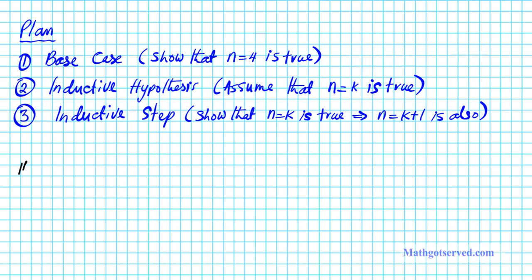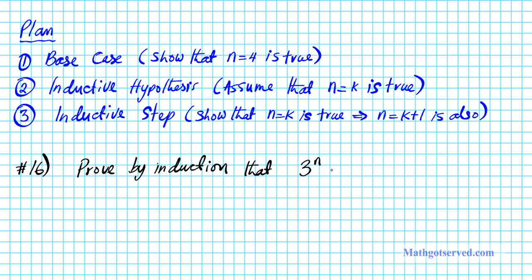All right, so let's take a look at problem number 16. What we're going to do here is prove by induction that 3 raised to the nth power is less than n plus 1 factorial, for n greater than or equal to 4. Of course, n is in the set of natural numbers. So there is what we're going to prove.